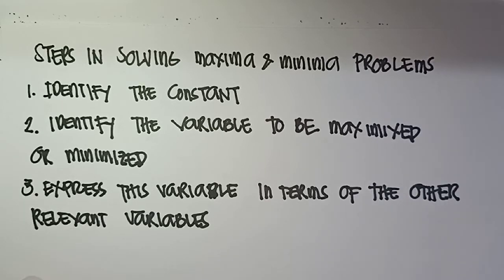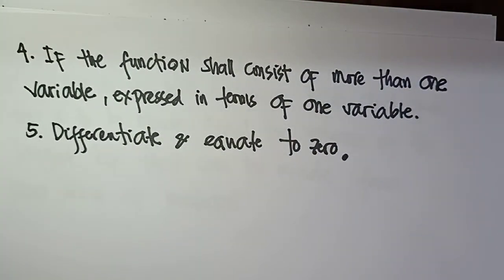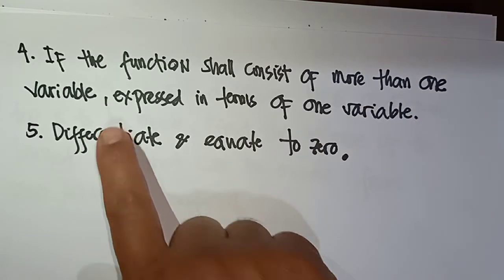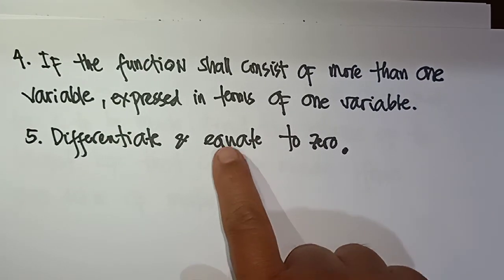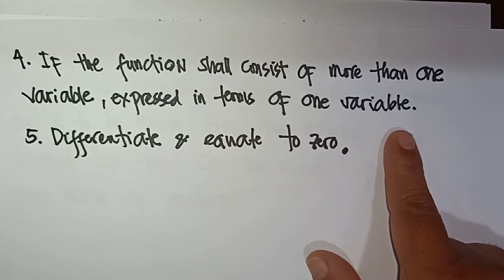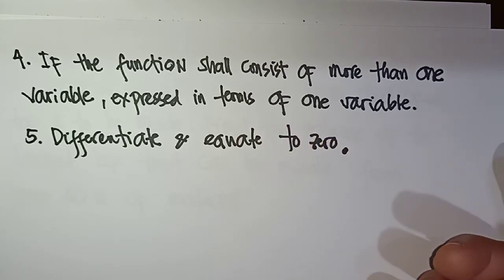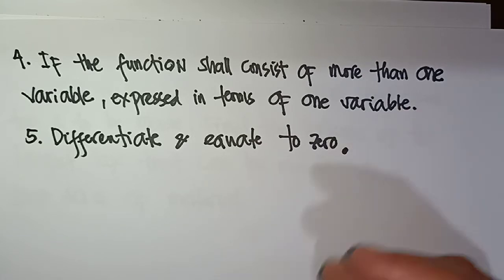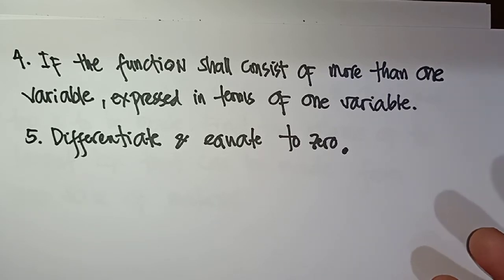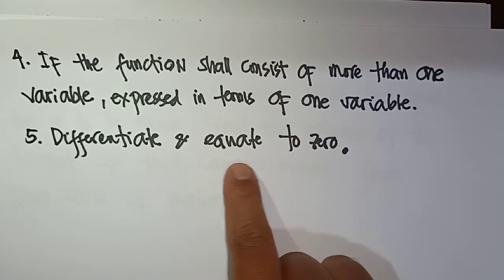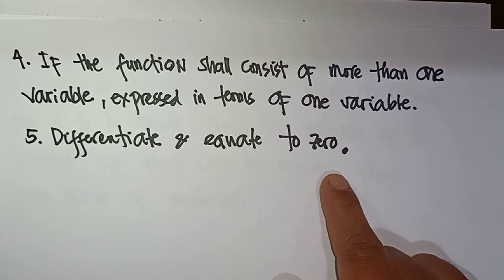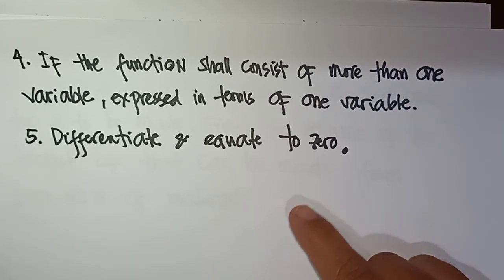Step 3 — express this variable in terms of the other relevant variables. Step 4 — if the function consists of more than one variable, express it in terms of one variable only. For example, if you have x and y, express y in terms of x so you have only one variable. Step 5 — differentiate and equate to zero.